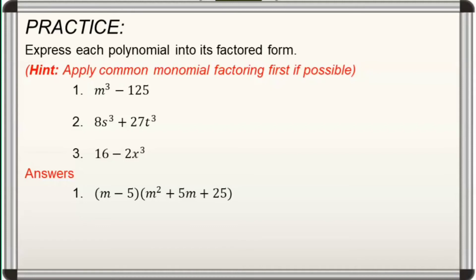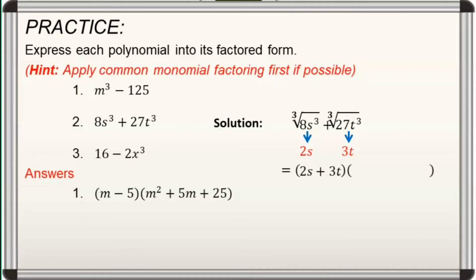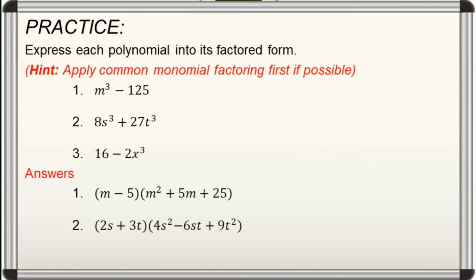For number 2, it's a sum of two cubes. Taking the cube roots of the first and second terms, we have 2s and 3t respectively. For our binomial factor, we have 2s plus 3t. For the trinomial factor, first term is 4s squared and third term is 9t squared, and our middle term is 6st. The sign of the middle term is negative and the third term is always positive. Hence, the factored form of 8s cubed plus 27t cubed is the quantity 2s plus 3t times the quantity 4s squared minus 6st plus 9t squared.